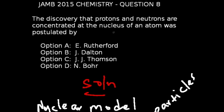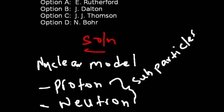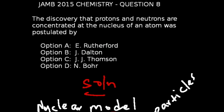Question number 8 of JAM 2015 chemistry exams: The discovery that protons and neutrons are concentrated at the nucleus of an atom was postulated by — many years ago, a man presented a model of an atom called the nuclear model. In this model he postulated that the proton and neutrons are concentrated at the nucleus, and the name of that man was Ernest Rutherford. The correct answer is option A.